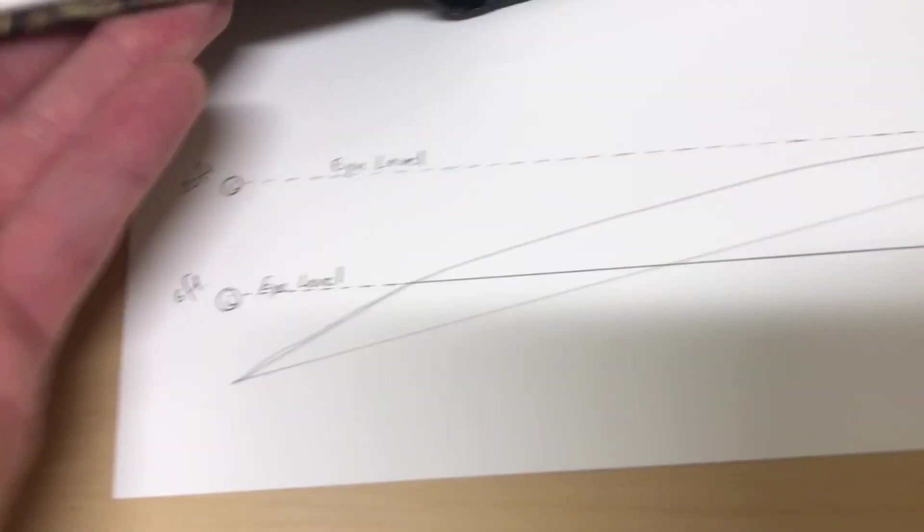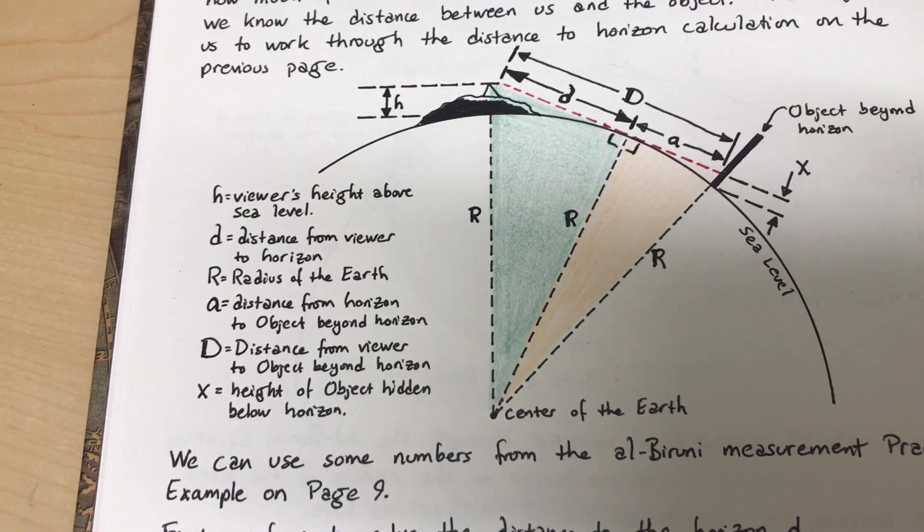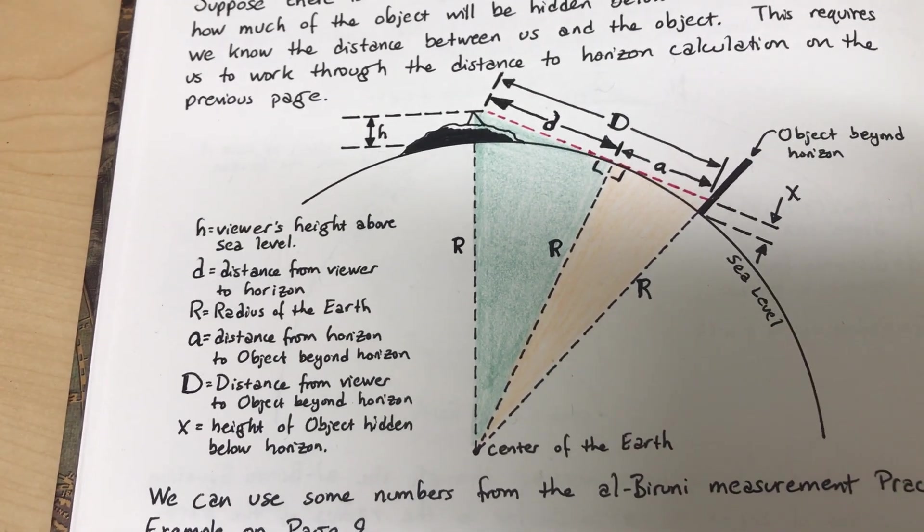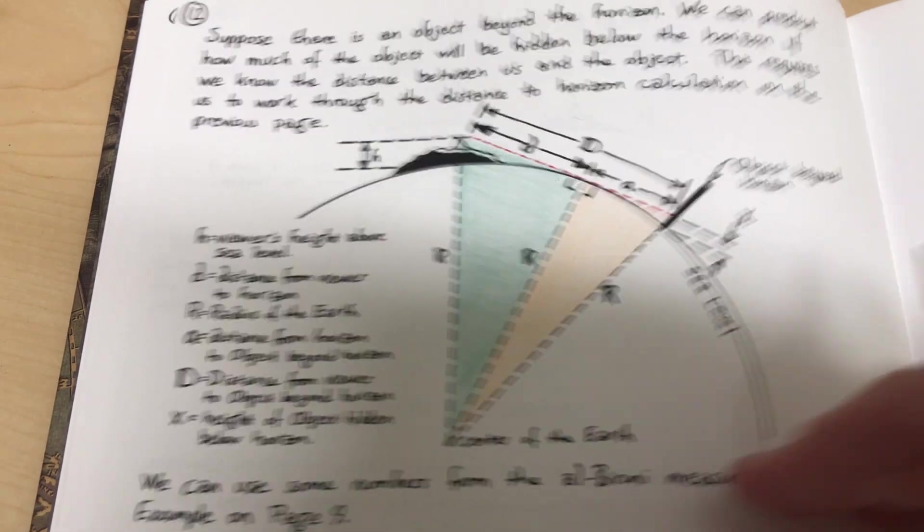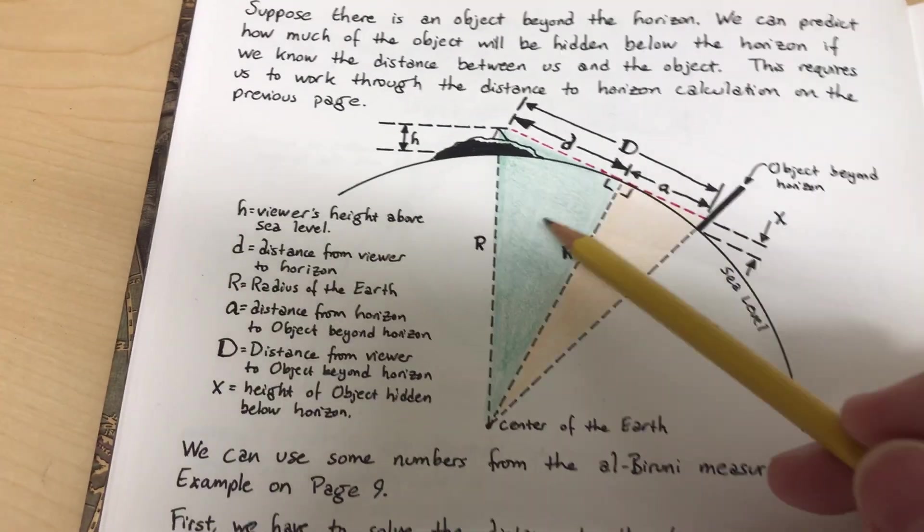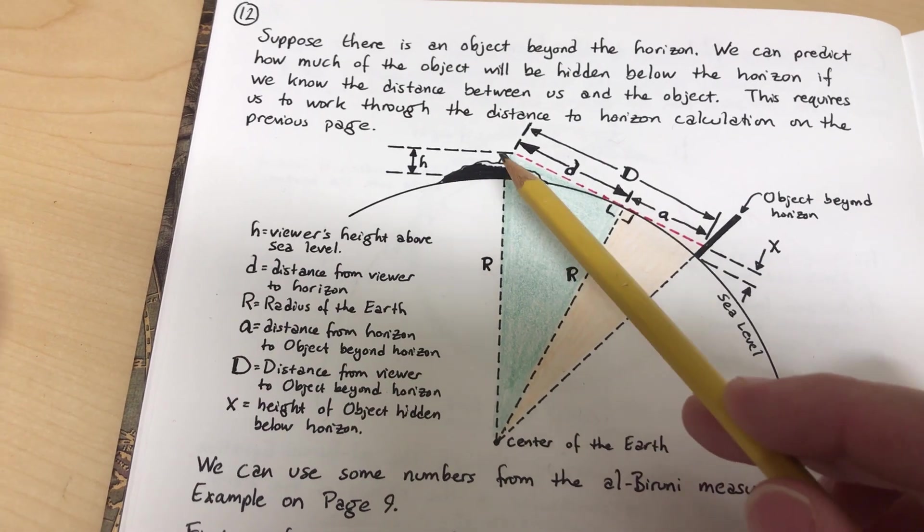So we have over here, excuse the lighting, we have the means by which you calculate your distance to the horizon. So that's this green shaded triangle. And suppose that you are up here at elevation little h.